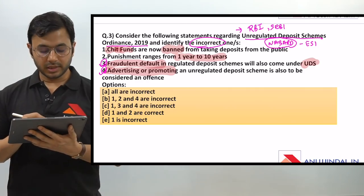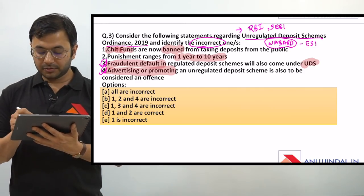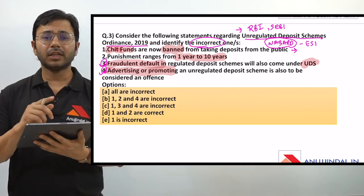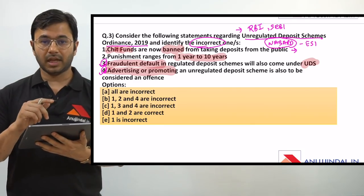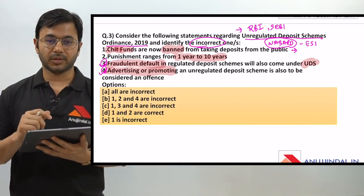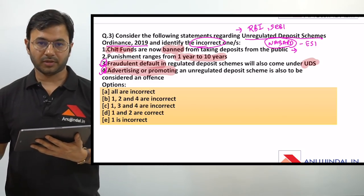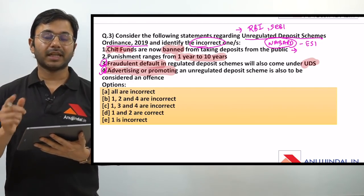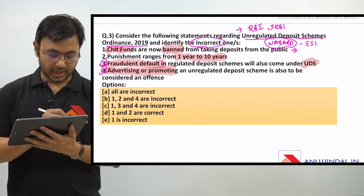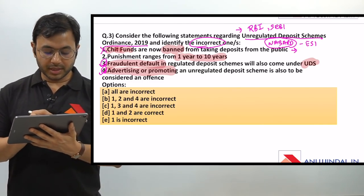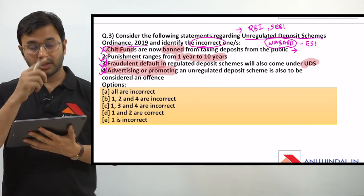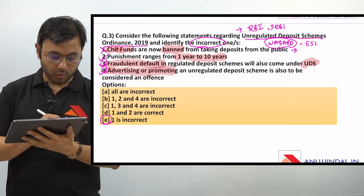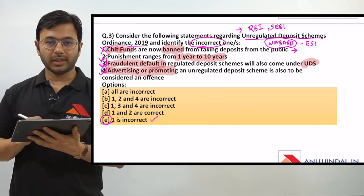Both options 3 and 4 are certainly right. Chit funds are now banned - but if you apply some logic, chit funds are actually regulated under the Chit Funds Act 1987, which comes under state governments. So all state governments are required to regulate chit funds. Therefore, chit funds not being an unregulated deposit activity, they cannot be banned under the Unregulated Deposit Schemes Act. So option 1 is incorrect. Punishment ranging from 1 year to 10 years is a factual option and certainly correct. Therefore options 2, 3 and 4 are correct and only 1 is incorrect - the answer is E.